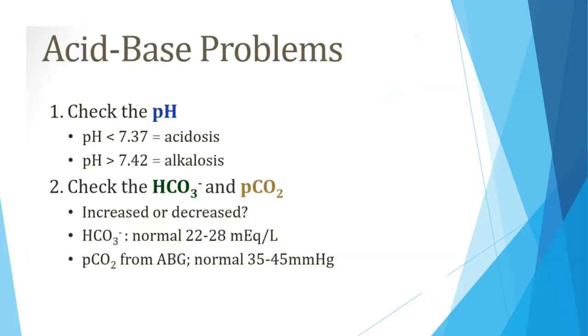For acid-base problems, first we need to check the pH. If the pH is less than 7.37, that means it is acidosis. And if it is more than 7.42, it is alkalosis.